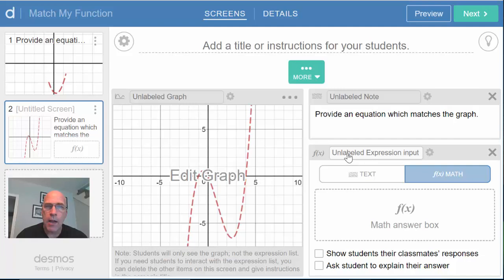First of all, where it says unlabeled expression input, we need to give that a name. I'm going to call it EQ2. It's an equation. I like 2 because it's on my second screen here. And I need EQ2, what students put in, to talk to the graph. So if you ever look at Activity Builder and you wonder what these little gears here in the gray boxes are, well, those are ways you can access computation layer in the programming language. So I'm going to click the one over by the graph here.